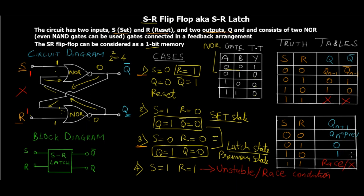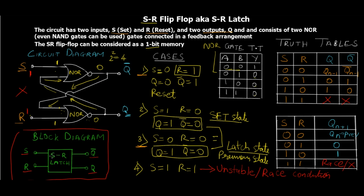That covers the SR flip-flop using NOR gates. We also have a block diagram: it's simply a square labeled 'SR latch' with inputs S and R on one side and outputs Q-bar and Q on the other. Nothing fancy — just a block diagram representing the internal functionality we've analyzed.